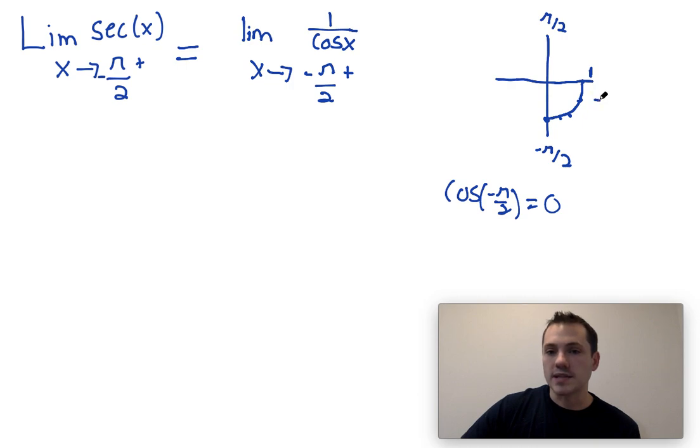When we're at negative π over 6, our x coordinate is going to be positive root 3 over 2. At negative π over 4, it's going to be root 2 over 2. At negative π over 3, it's going to be 1 half. As we get closer and closer, we can see that this number is going down. We're going from root 3 over 2 to root 2 over 2 to 1 half. As we get closer and closer, we're going to keep approaching 0, but we're not quite there.